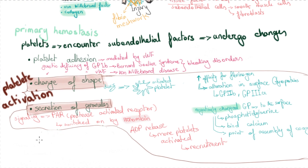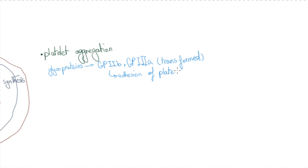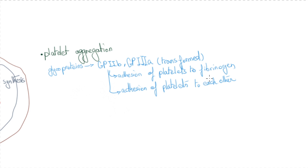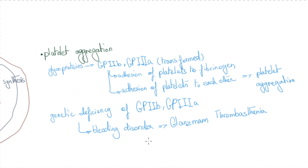Platelet aggregation: the transformed glycoproteins IIb and IIIa allow binding of fibrinogen to platelets as well as platelets to each other, leading to aggregation at the site of injury. Genetic deficiency of glycoprotein IIb and IIIa causes a bleeding disorder called Glanzmann thrombasthenia. Initially the aggregation is reversible, but once consolidated by platelet contraction, it becomes irreversible, as the plug turns into a solid block.